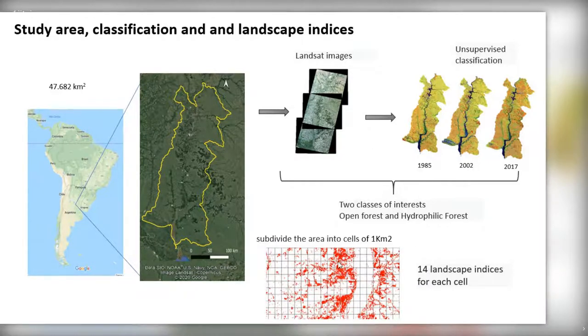The study area was subdivided into cells of one square kilometer. This is approximately 50,000 cells in the interior area. Connectivity was estimated by calculating 14 landscape metrics for each of the cells and for each of the classes.